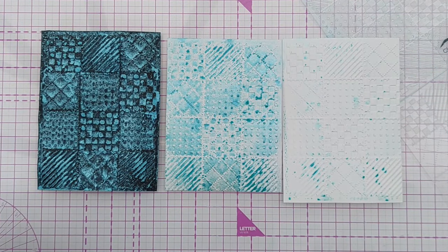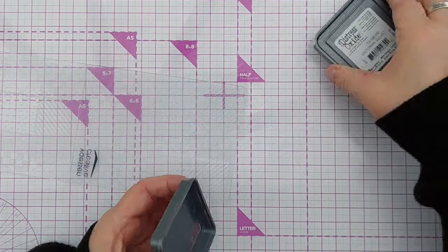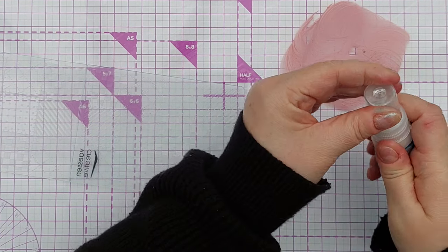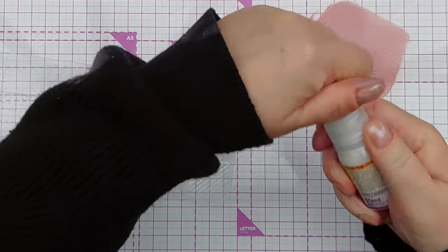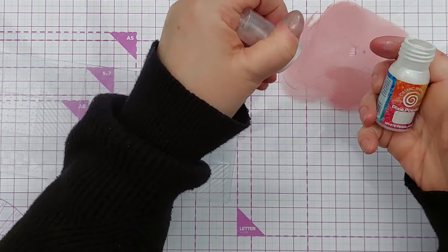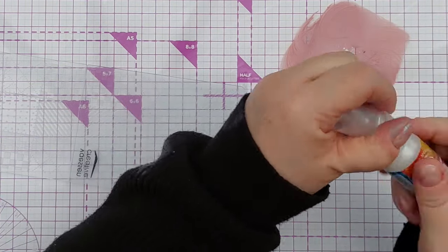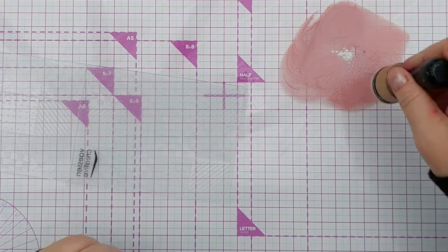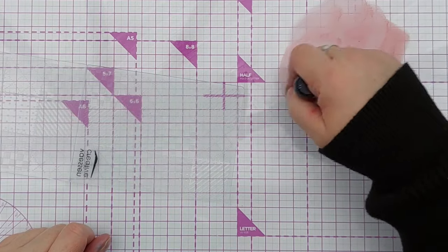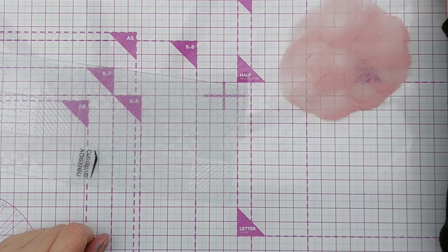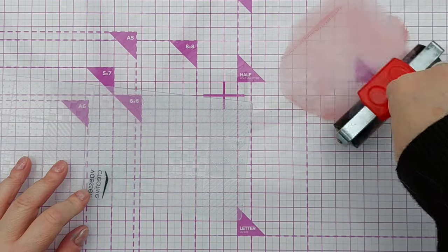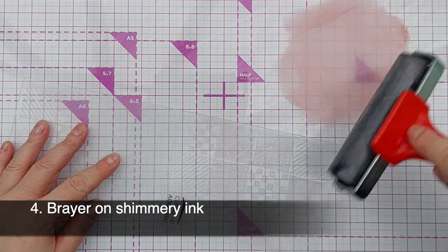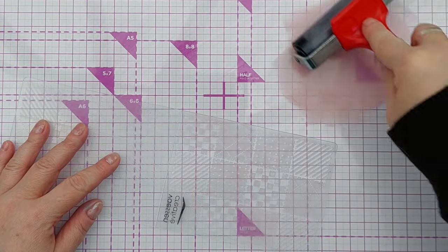Now I'm going to get a bit of Victorian Velvet Distress Oxide and sprinkle on a bit of Cosmic Shimmer Pixie Powder, this is White Pearl Mixer. I'm going to take a flat blending sponge and give that a good mix around to get that white powder mixed in. Now I've got a brayer here and I'm going to pick up some of this shimmery ink and roll it over my embossing folder.